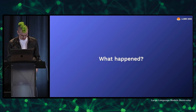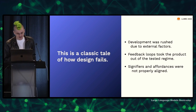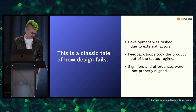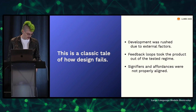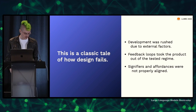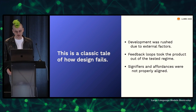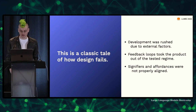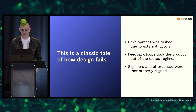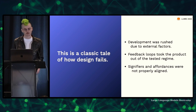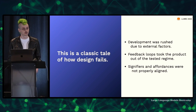So what happened? It's a pretty classic tale of how design fails. Development was really rushed due to external factors, which meant people had to cut corners. There were uncontrolled feedback loops that took the product very quickly out of its tested regime. Feedback loops are a known source of issues in design. And the signifiers and affordances of the system were very poorly aligned. Goran Branwen wrote a really nice analysis of this on LessWrong — very detailed and has aligned well with information that became available later.